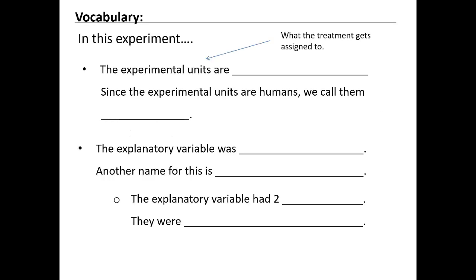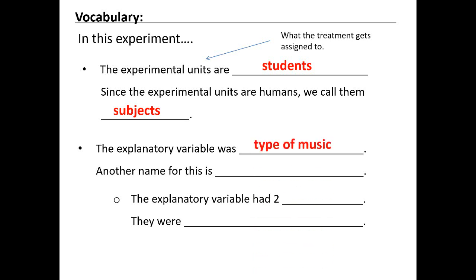In this experiment, the experimental units are students. Experimental units are the individuals that the treatments get assigned to. When experimental units are humans, we can call them subjects; otherwise, we would just call them experimental units. The explanatory variable is the independent variable — in this case, it's going to be the type of music that we choose to assign. We can also call the explanatory variable a factor. This is a very vocab-intensive unit, so I would make flashcards for all of these different vocabulary terms.